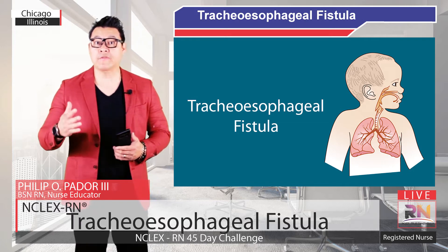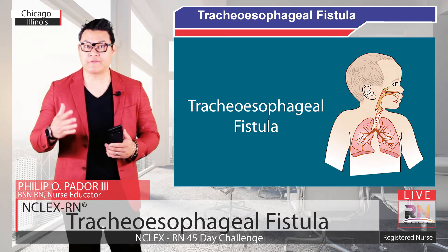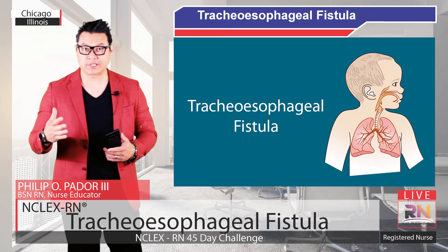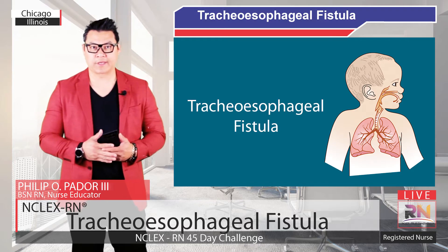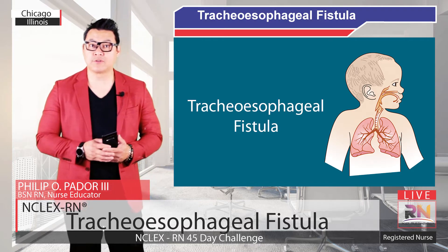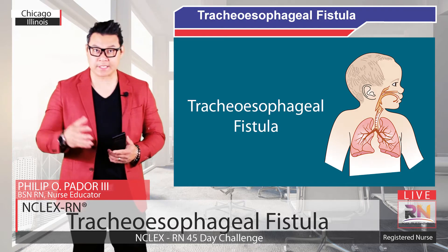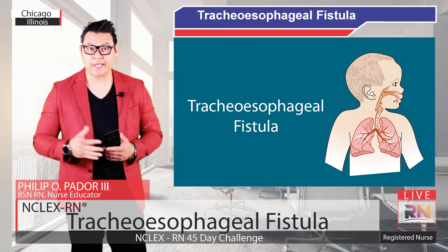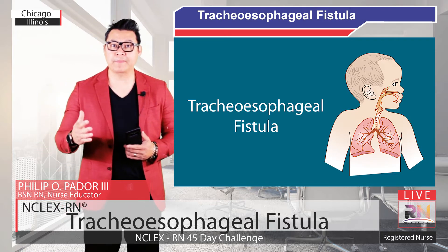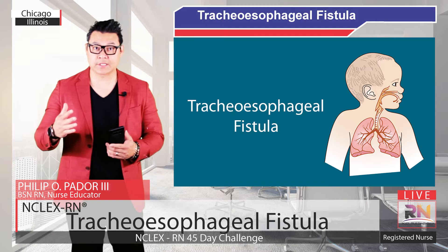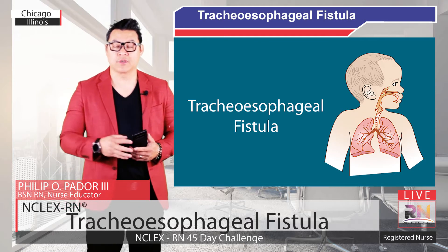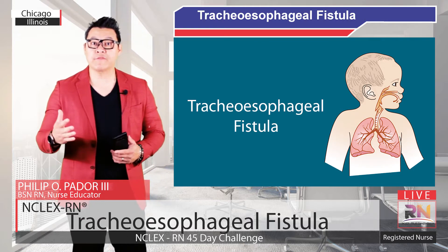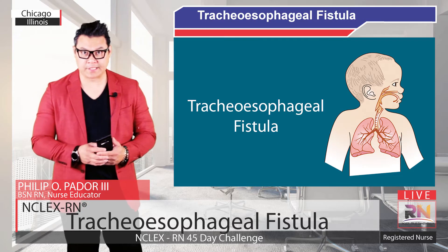A tracheoesophageal fistula is a birth defect in which the esophagus has abnormal connections to the trachea. The esophagus is the tube that food passes through from the mouth to the stomach, and the trachea is the windpipe that air passes through from the mouth and nose to the lungs. The trachea forms during the sixth week of pregnancy.